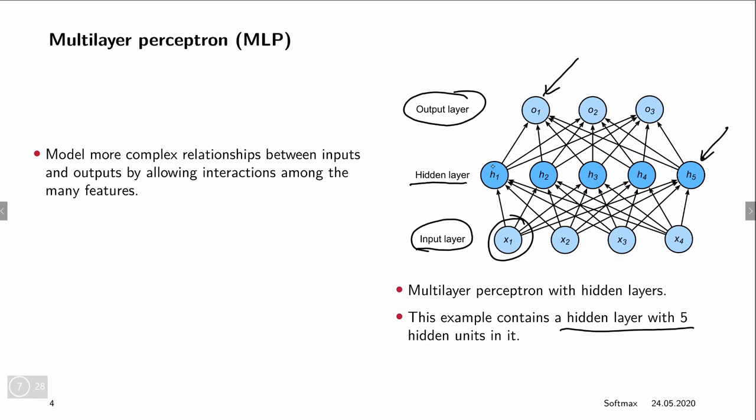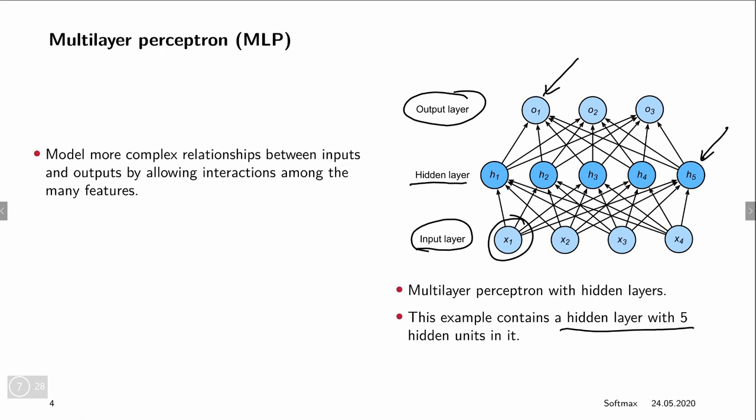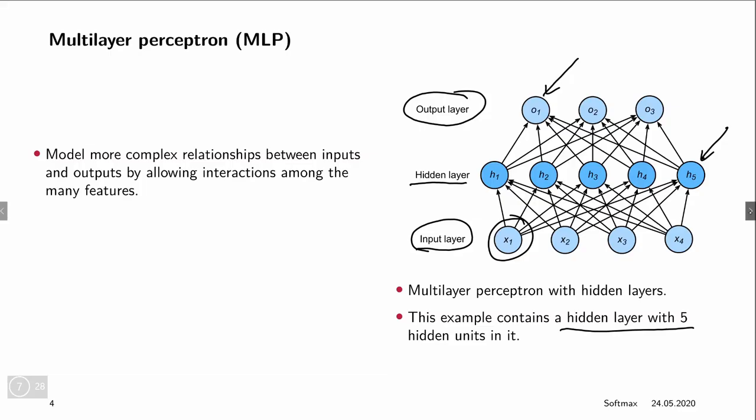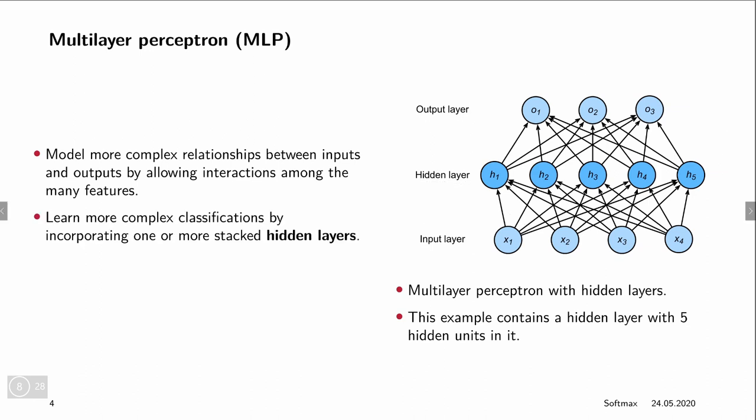Each node in the input layer is connected to each and every node in the hidden layer. Different from before is that the input layer is no longer connected to the output layer directly, but only via the hidden layer. Each node in the hidden layer is connected to every node in the output layer — so we're stacking these on top of each other, with each layer again fully connected. This figure shows a two-layer neural network. These hidden layers allow us to learn more complex functions.